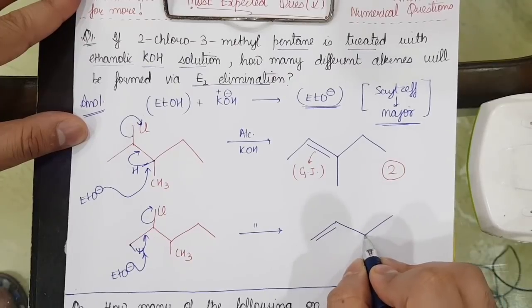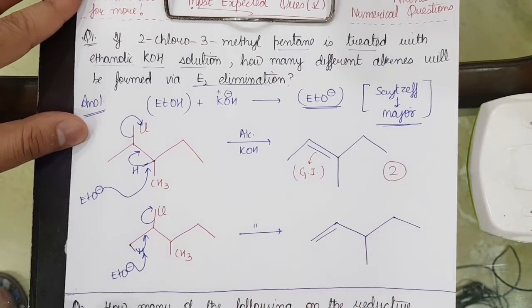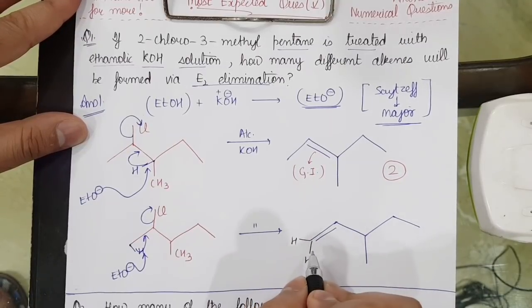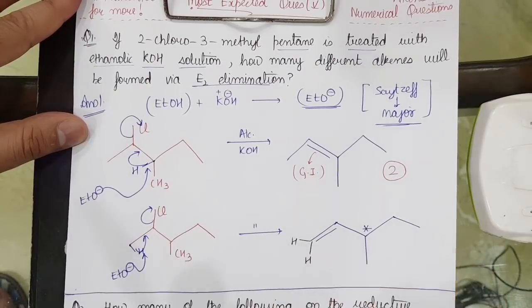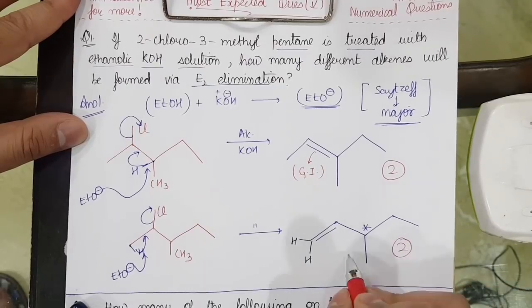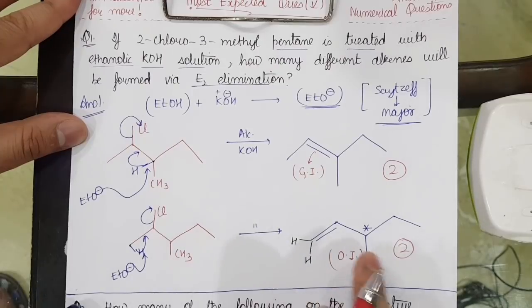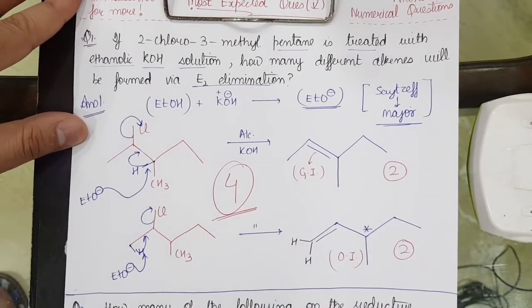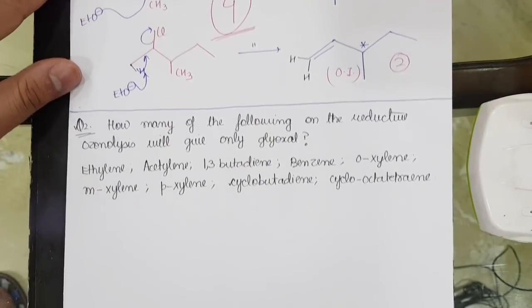So we will get the formation of this product. Now here the double bond cannot show geometrical isomerism because these hydrogens are the same. But optical isomerism can be shown because this is a chiral carbon. In this case, due to optical isomerism I will have 2 products to be formed. So the correct answer will be equal to 4 alkenes can be formed via E2 elimination.